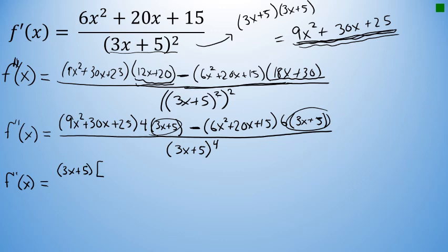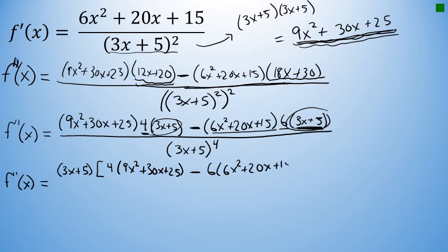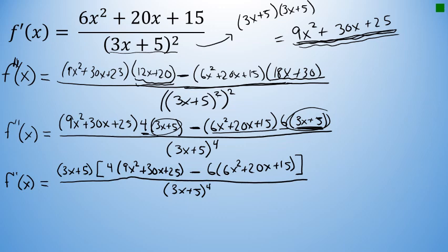After factoring (3x + 5) out to the front, I'm left with 4(9x² + 30x + 25) minus 6(6x² + 20x + 15). Once that (3x + 5) is factored out front, it's easy to see that it cancels with one of the factors of (3x + 5) in the (3x + 5)⁴ denominator, leaving (3x + 5)³ in the denominator.